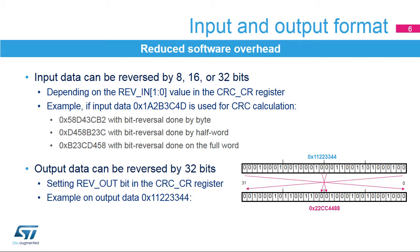It allows the application to manage different endian schemes. The input data can be reversed and performed on 8, 16, or 32 bits, depending on the REV_IN[1:0] bits in the CRC_CR register. For example, input data 0x1A2B3C4D is used for CRC calculation as 0x58D43CB2 with bit reversal done by byte, 0xD458B23C with bit reversal done by half-word, and 0xB23CD458 with bit reversal done on the full word. The output data can also be reversed by setting the REV_OUT bit in the CRC_CR register.